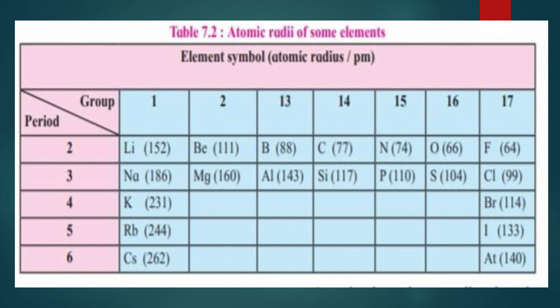Down the group in the first group — lithium, sodium, potassium and so on — the atomic radius is increasing. Lithium is 152, sodium is 186, potassium is 231, and so on. So atomic radius decreases across a period and increases down the group. This is because greater the effective nuclear charge, stronger is the attraction of the nucleus for the outer electrons, and smaller is the atomic radius.